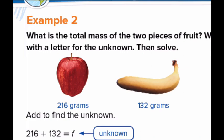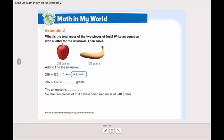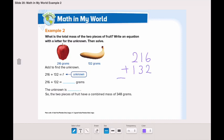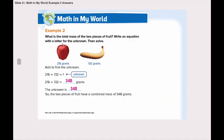216 plus 132 equals F. What is F? F is the unknown. Let's add together. 216 plus 132 equals. Remember we start with the ones place. 6 plus 2 is 8. 1 plus 3 is 4. 2 plus 1 is 3. So what is the total amount? Yes, the total amount is 348 grams.